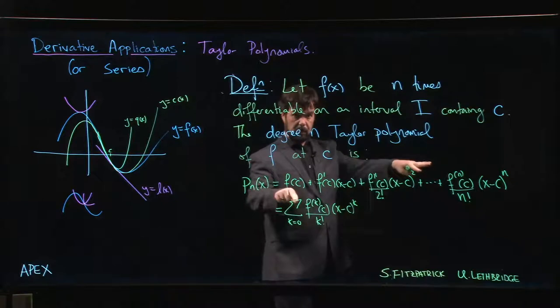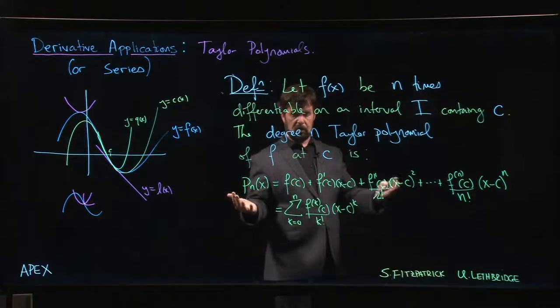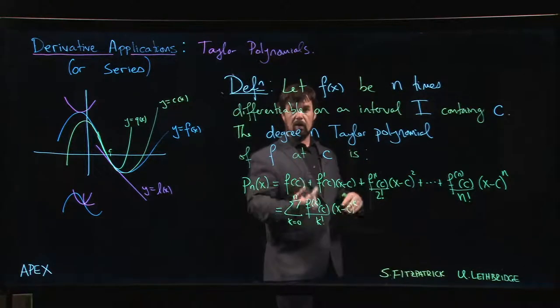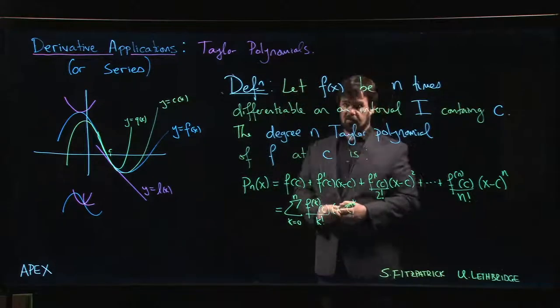You let this sum go not to n, we're not going to stop at a polynomial. We're going to go all the way to a power series - we're going to let k go from zero to infinity and then you have a Taylor series.